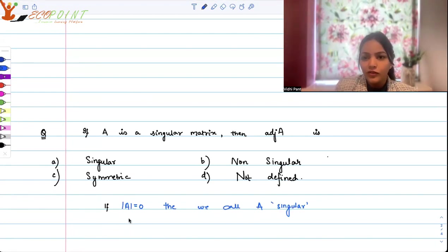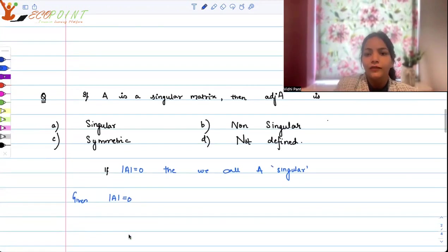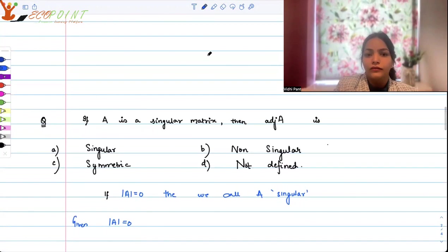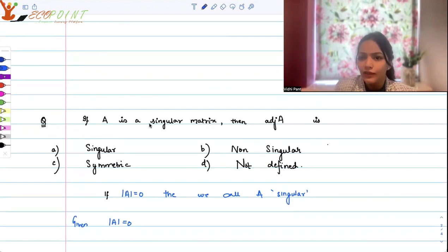So singularity of a matrix means its determinant is 0. So clearly here, what are we given? We are given that the determinant of A is 0. What we need to figure out is then adjoint A is singular, non-singular, symmetric, not defined. So I'm going to start with the property of singular by checking singularity.